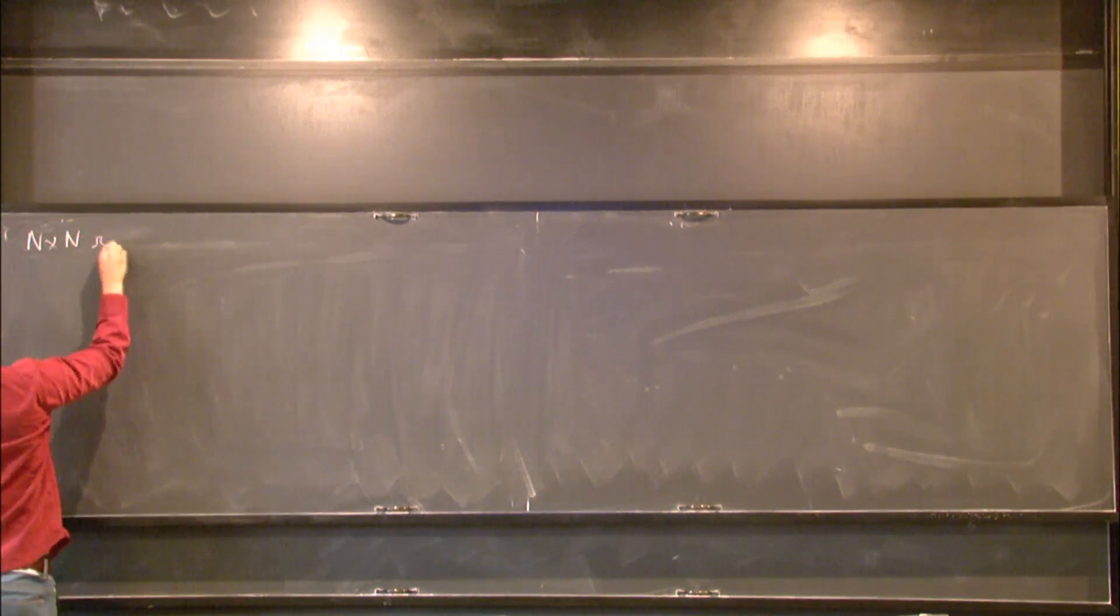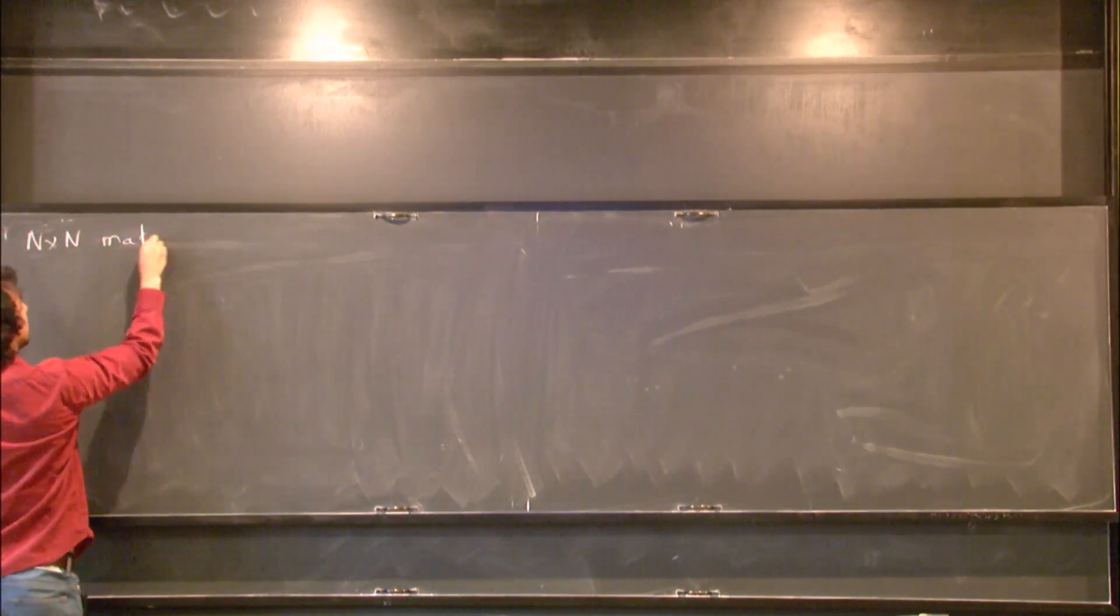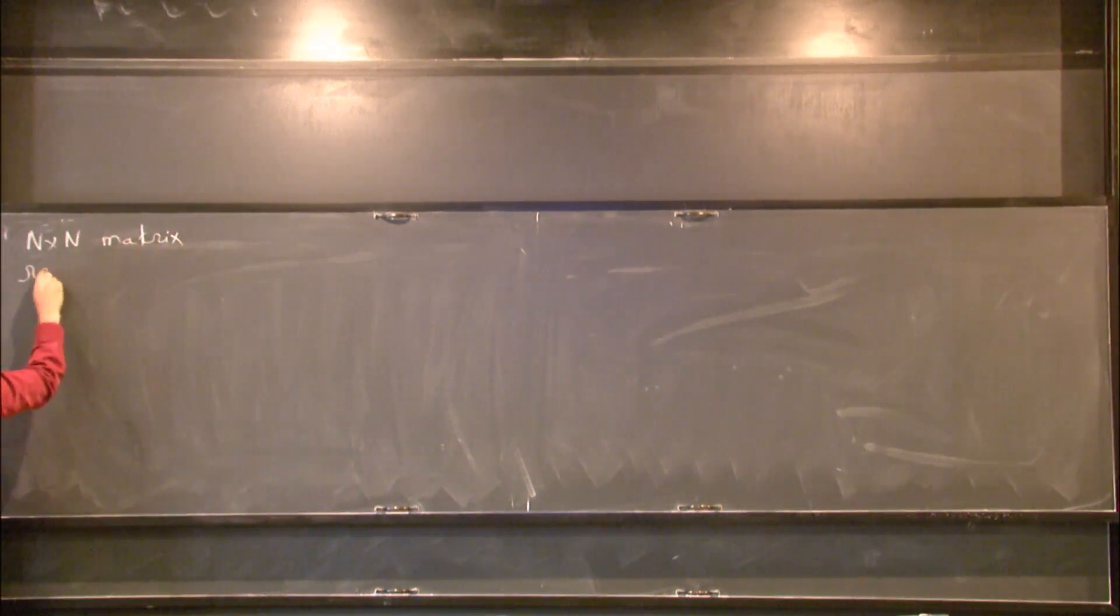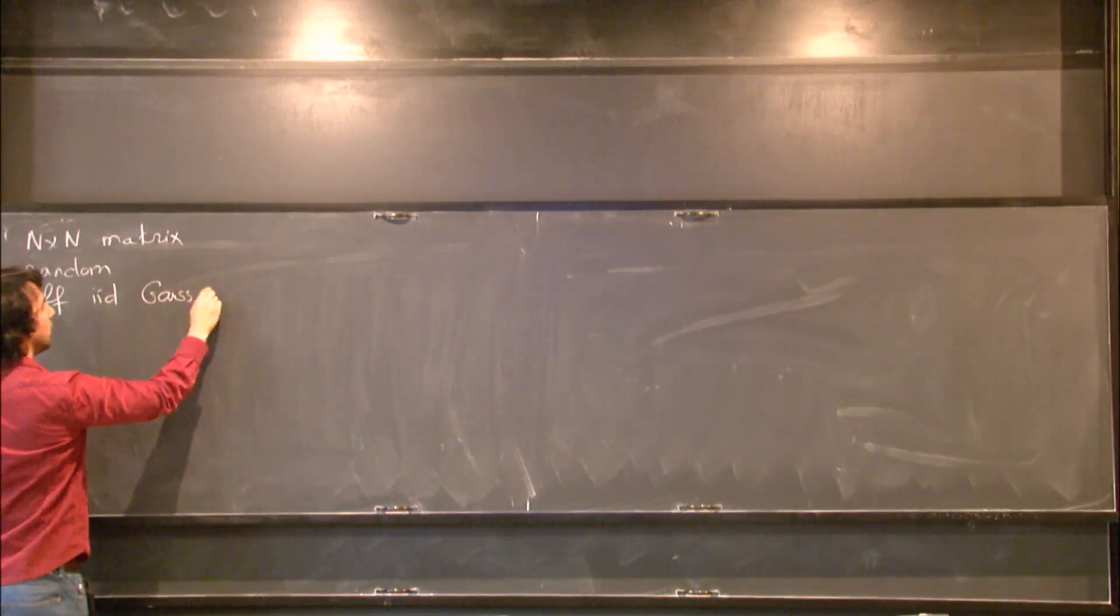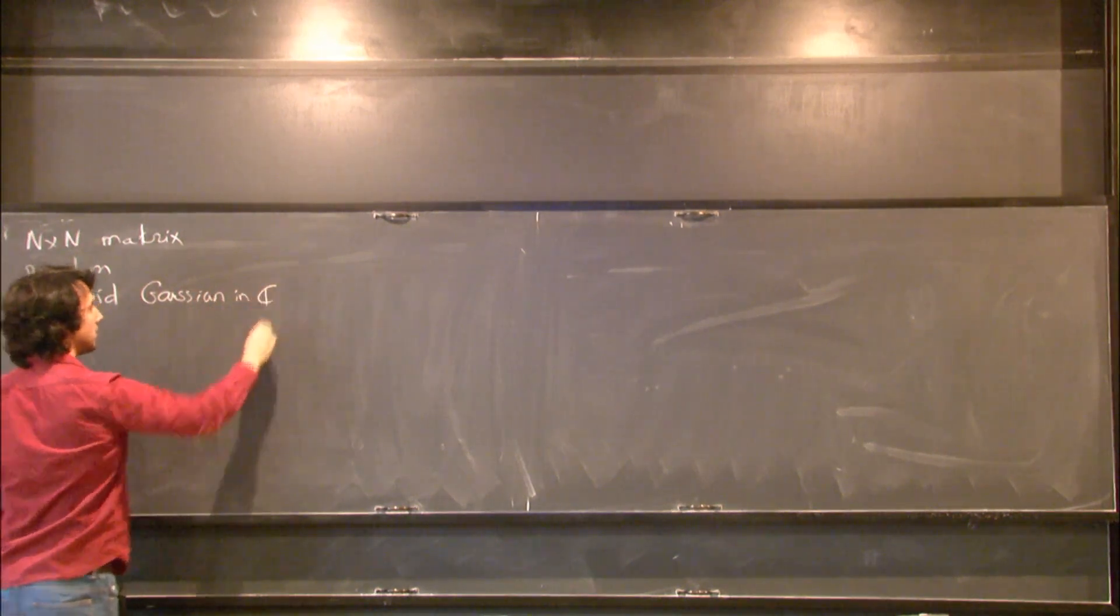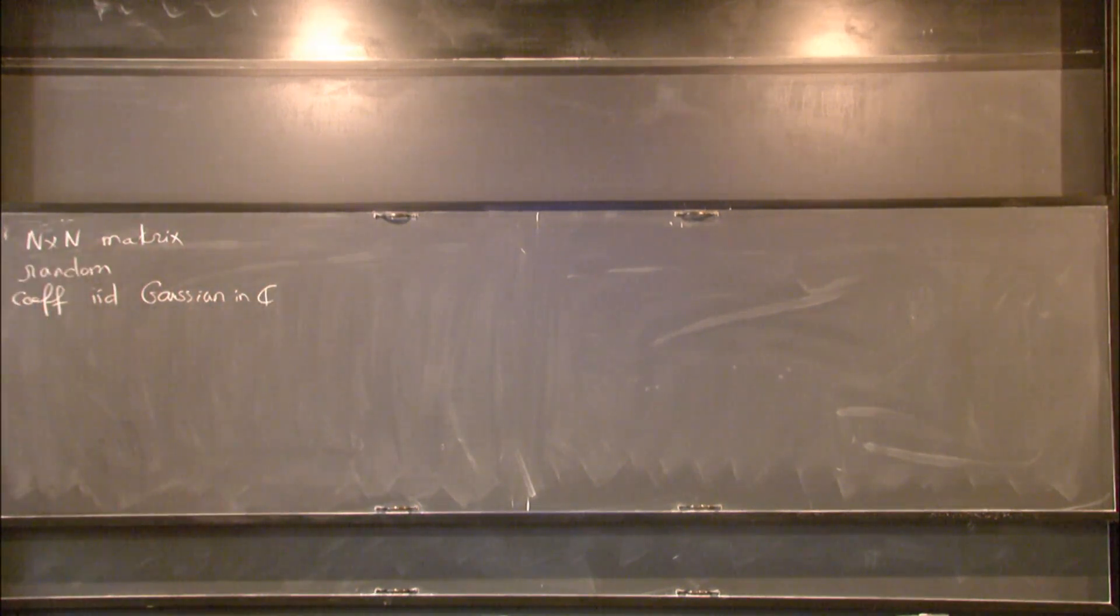So let's take an n by n matrix, but let's take it random in a pleasant way. So what's the easiest way? Let's take coefficients IID and Gaussian in C, so complex Gaussian. I have to specify the mean and the variance, but that's not important for me today.